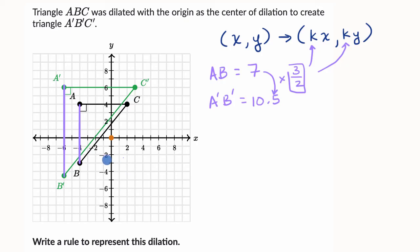Well, we could try that with a few other sides just to make sure. So let's look at AC. AC is equal to one, two, three, four, five, six units long. And then A prime, C prime. If it's this scaling factor, three halves times six, we should see A prime, C prime should be three halves times this, which would be nine. So let's see if that's true.